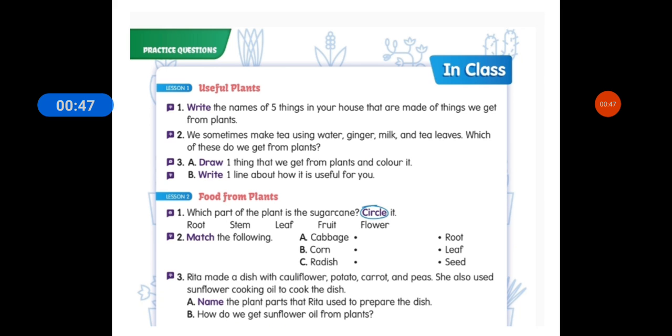Like we get wood from plant and wood will be made of furniture or made of a cupboard. And we also get medicines, we also get food, we also get paper and we also get rubber. Clear? So we have to write the 5 things that we get from plant.